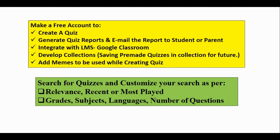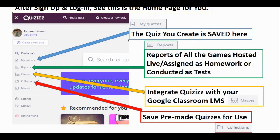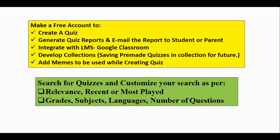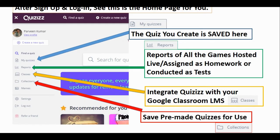You can add memes, generate quiz reports, and email the quiz reports to parents and students. When using 'Find a Quiz', you can apply filters like relevance, recent, most played, grades, subjects, languages, and number of questions. You can also customize them. The interface shows 'My Quizzes' where your quizzes are saved, and 'Reports' where you find useful data on games played.